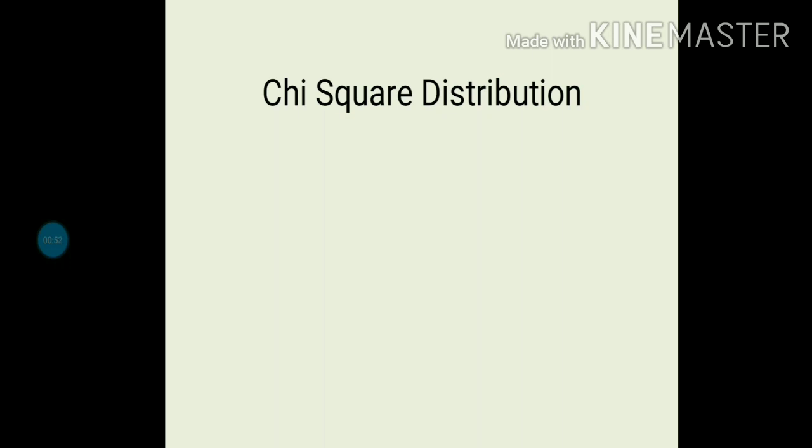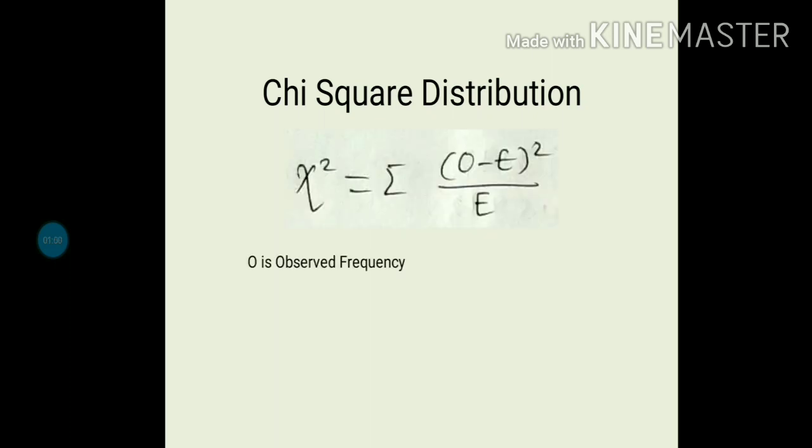Mean, variance, and standard deviation of populations are not given, so it is called a non-parametric test. If you just recall the formula of normal distribution, it was z = (x-bar minus mu) upon (sigma upon root n). So if we just find the square of this, we will get the formula for chi-square distribution.